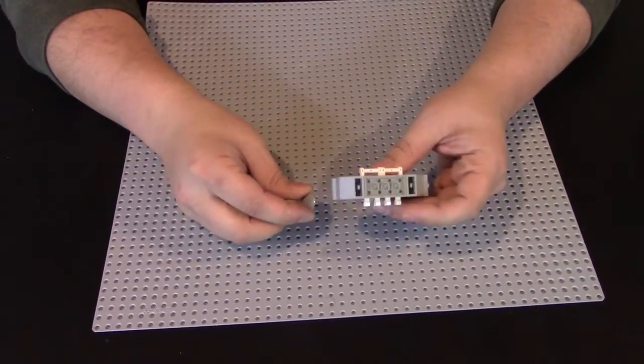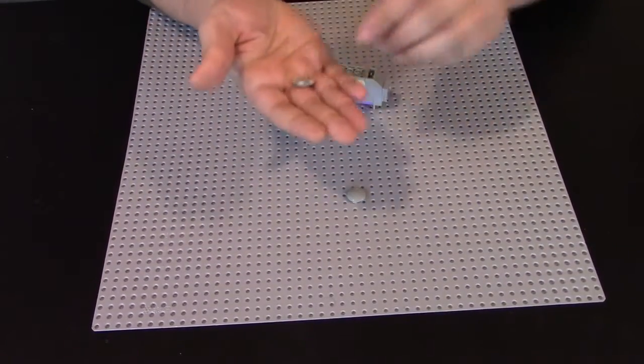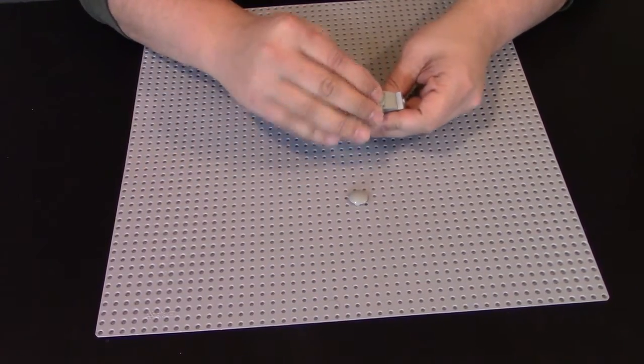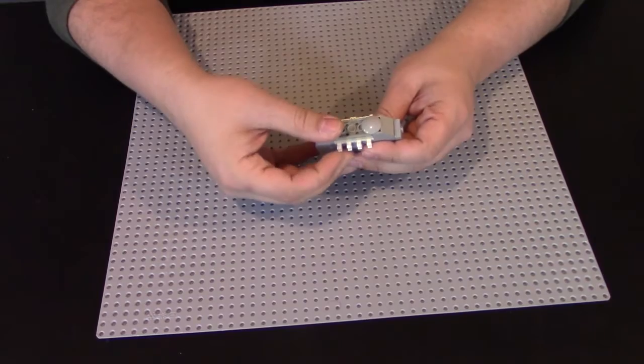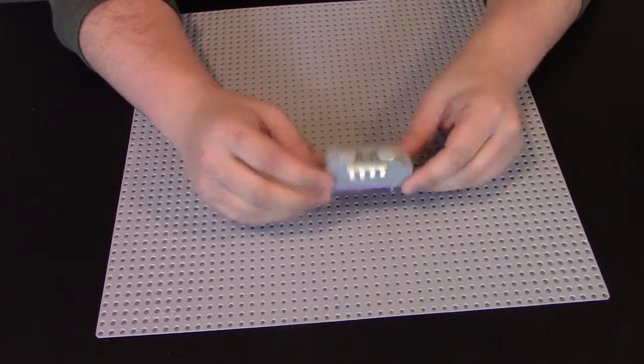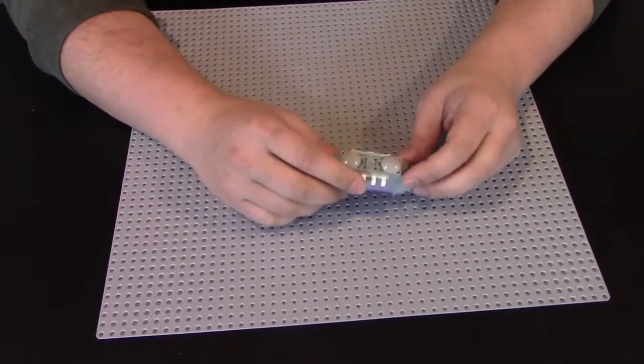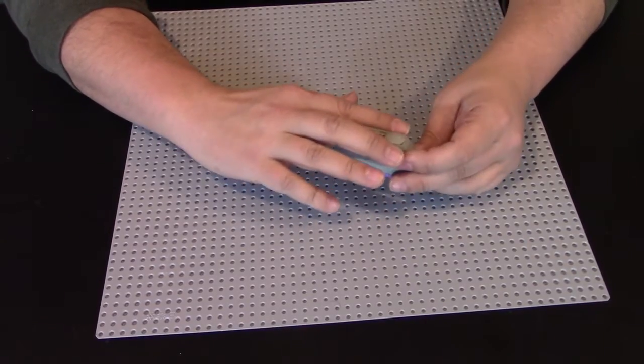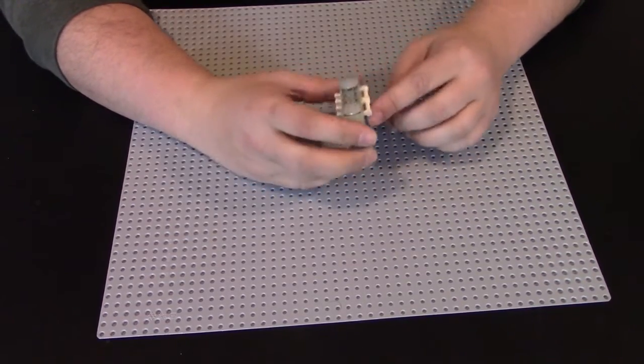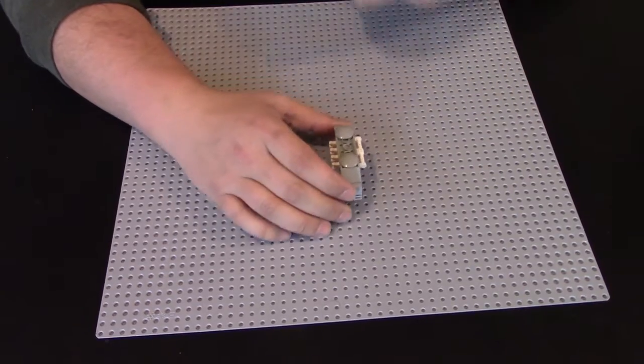Then we're going to kind of connect this all together with some of these 2x2 round inverted tiles on each side there. Securing those inverted slopes to the plates so it's all one nice assembly. Now the thing we're going to build in the middle here is going to help hide the hinges so that you can't see them from the outside. And we used the white hinges because we just had a lot of those. But I mean, I guess if you wanted to make it perfect, you could make it gray like the rest of this.